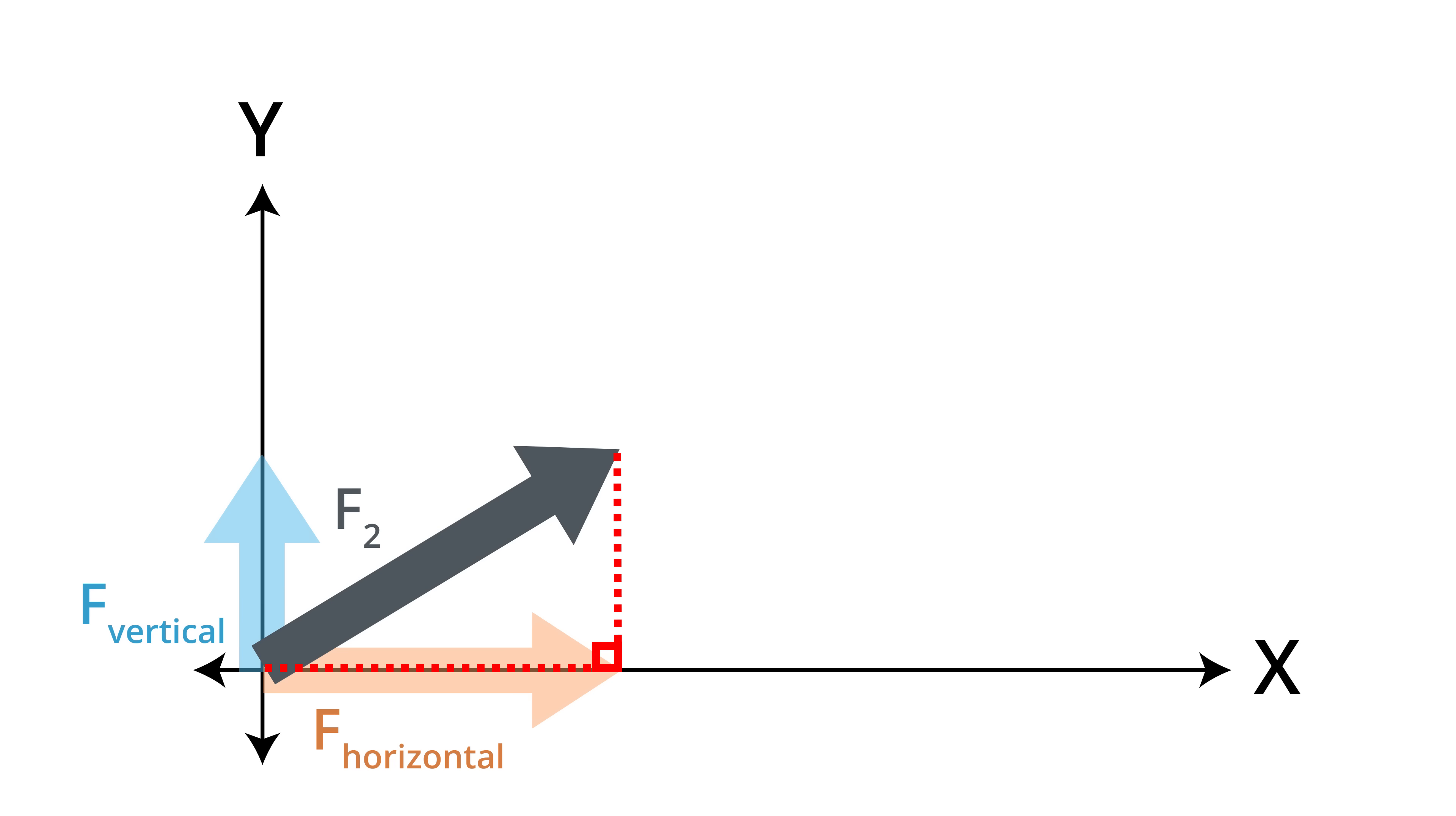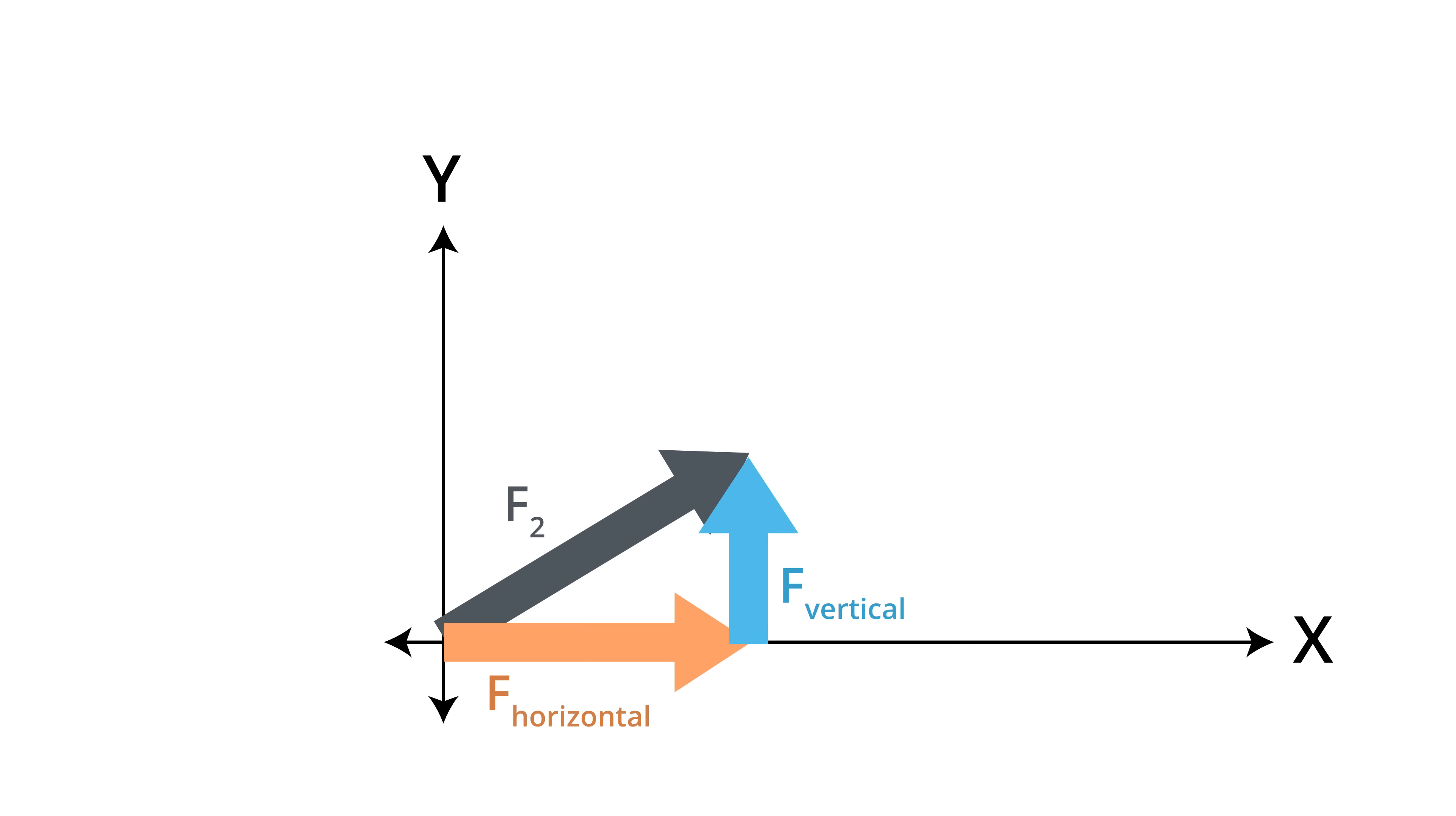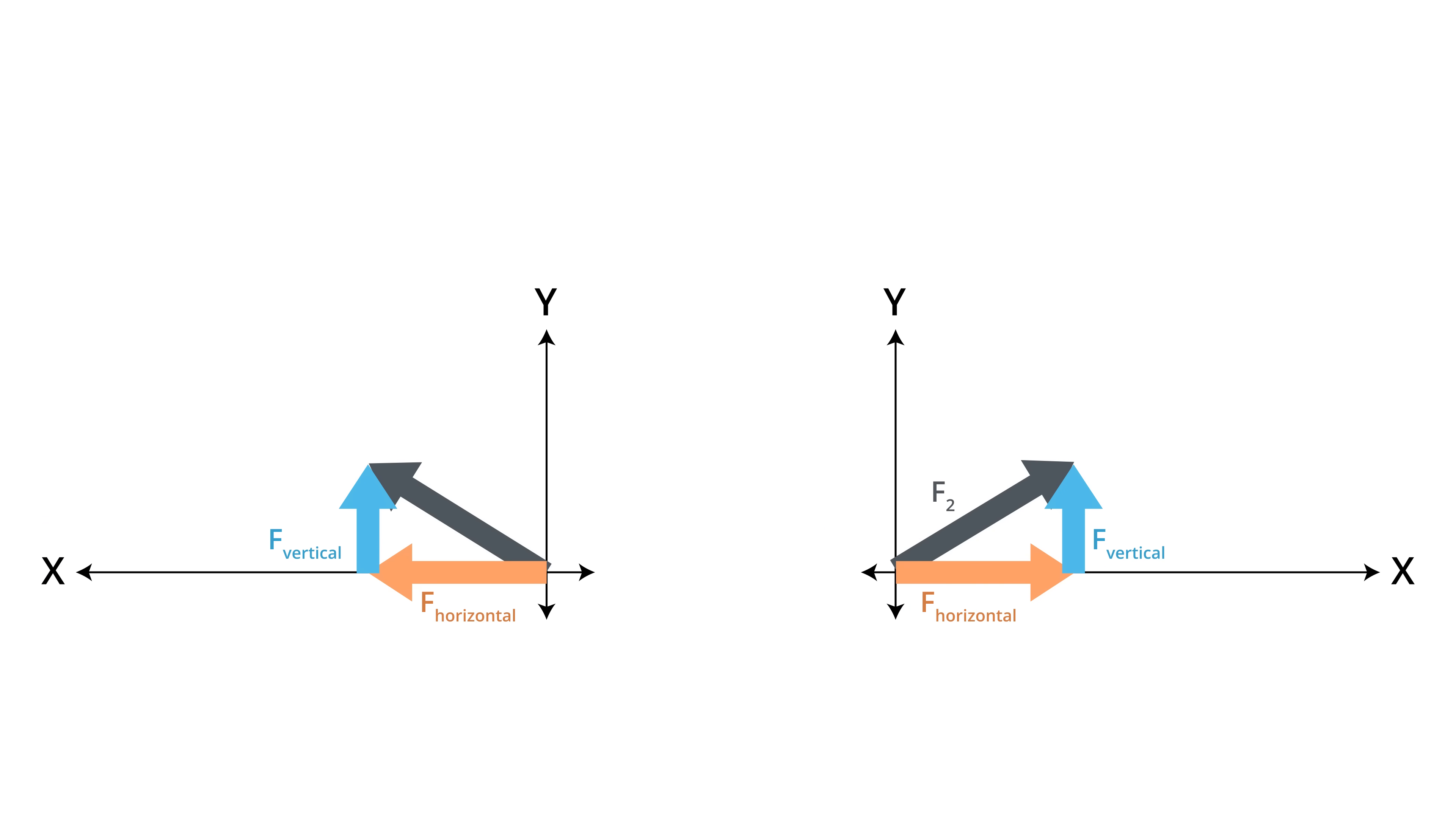The first step in graphically resolving F2 into its components is to construct a right-angled triangle with horizontal and vertical edges and with F2 as its hypotenuse. One can show mathematically that the length of the horizontal edge of the resulting triangle is proportional to the horizontal component of the force F2. Similarly, the vertical edge of the triangle is proportional to the vertical force component. In this case, the horizontal component of the force is clearly much larger than the vertical one. We don't need to analyze the forces on the left side of the hammock in detail because they mirror those on the right.